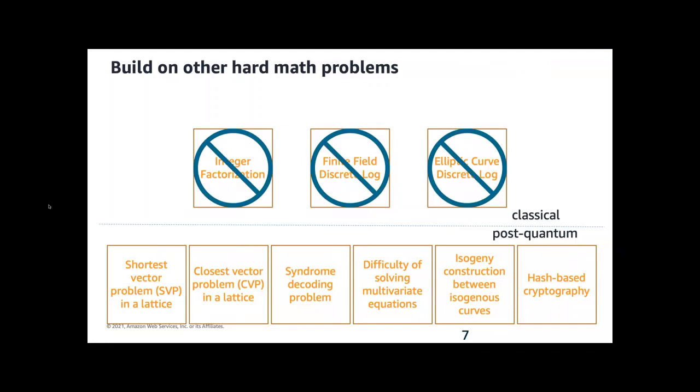We need new public key crypto systems that are secure against a large-scale quantum computer, so-called post-quantum or quantum safe algorithms. These are algorithms that run on classical computers we use today but are not known to be vulnerable to such a large-scale quantum computer. Our existing public key algorithms are defined on integer factorization and discrete log, which are broken by quantum computers.